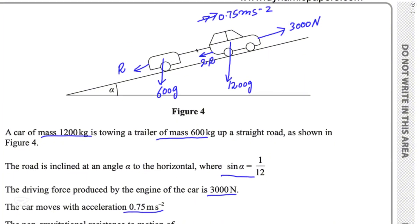The trailer and car are connected with a light rod, so tension acts between them — these forces cancel each other's effect. Normal reactions are perpendicular to the surface: Nt is the normal reaction for the trailer and Nc for the car. These are all the forces acting on the system.